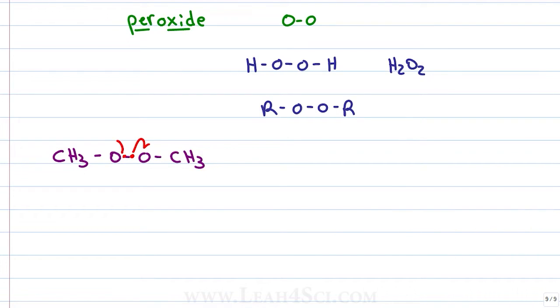We have a homolytic cleavage reaction where the oxygens each grab one electron and break apart to give us two OR radicals, in this case CH3 bound to an oxygen. Remember, each oxygen had two lone pairs and now we get that extra single unpaired radical electron.